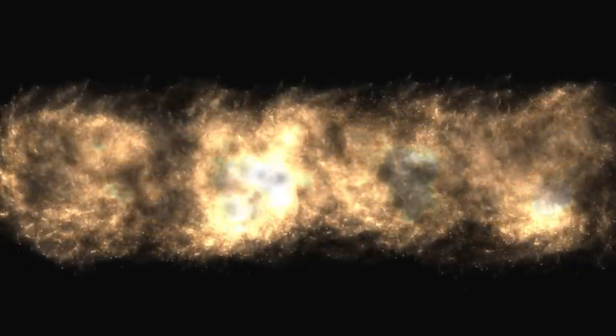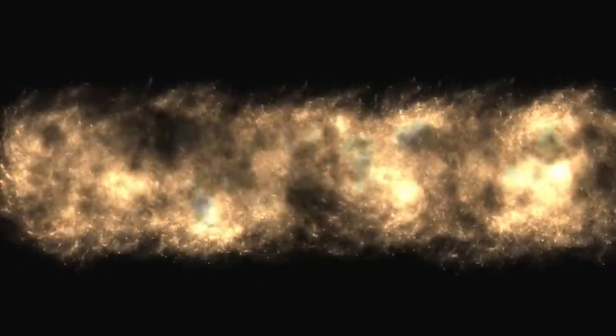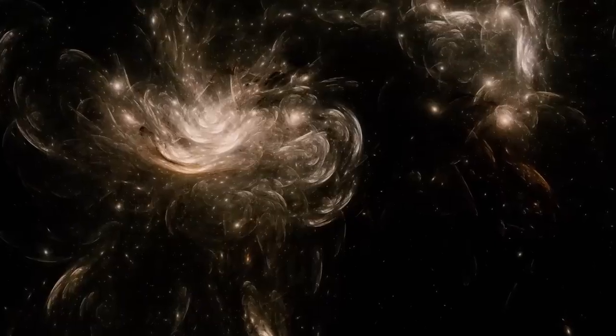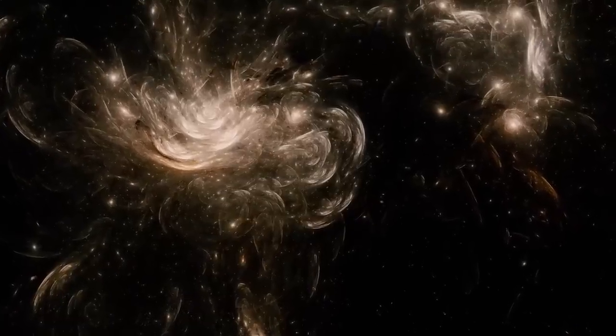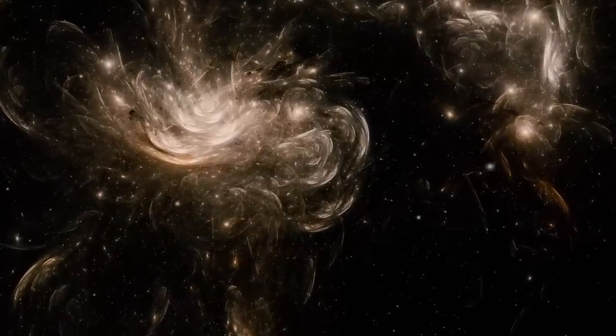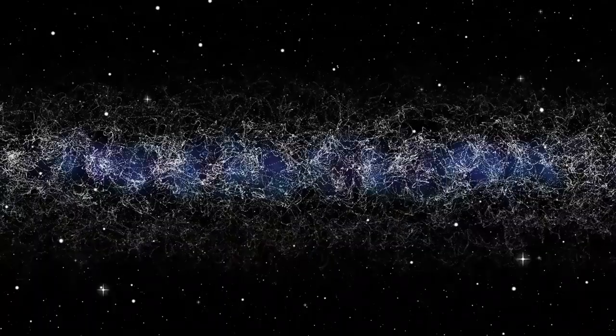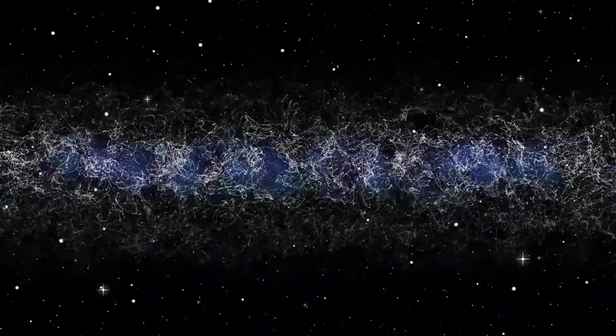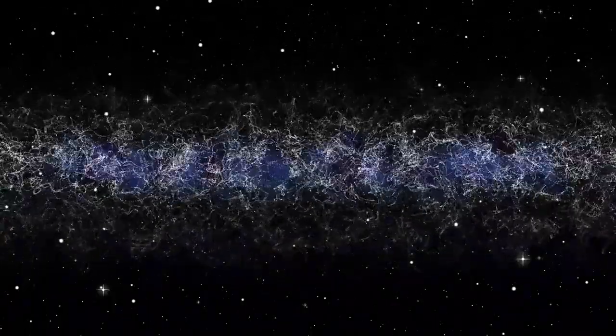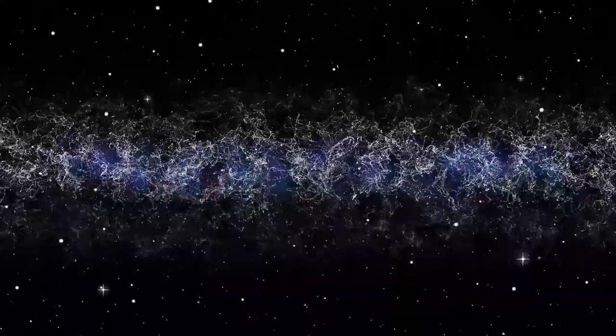To visualise this, imagine if our solar system were reduced to the size of a coin placed on a map of the United States. The entire Milky Way would then span the size of the actual continent. In that vast region, there would be around 300 billion star systems, and we are just one of them, adrift in a sea of unimaginable scale.